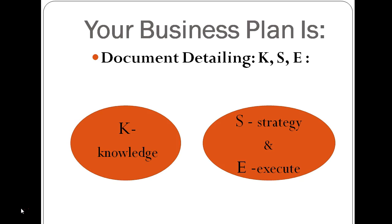Your business plan is the combination of the knowledge you've gained and the strategy you're going to take. A strategy is a plan of action that you've designed to achieve a long-term aim or objective — so what actions you're going to take — plus the execution part, which is the order of those actions.